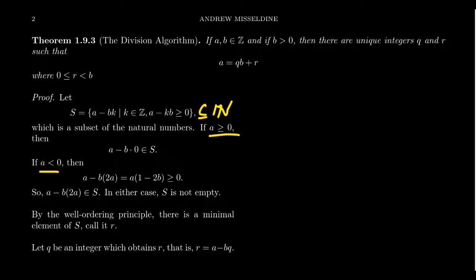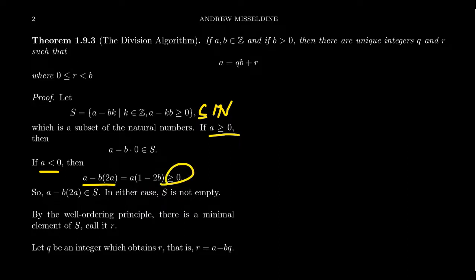If A is negative, we treat it separately with a proof by cases. We subtract from A the quantity B times 2A, which factors to give A times (1 minus 2B). Since B is a positive integer, 2B is larger than 1, so 1 minus 2B is negative. Multiplied by the negative A, we get something non-negative — so this quantity belongs to S because it's greater than or equal to 0. In either case, S is non-empty. Now we can invoke the well-ordering principle because we have a non-empty subset of the natural numbers.